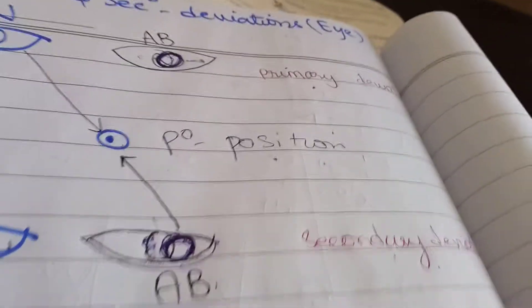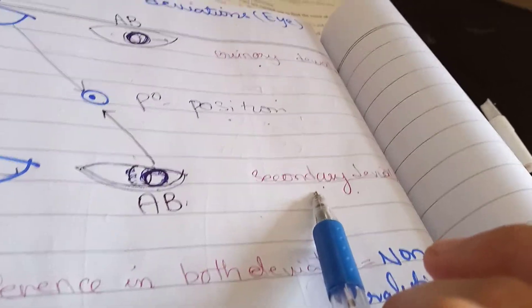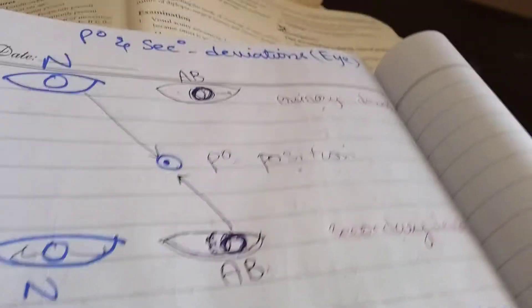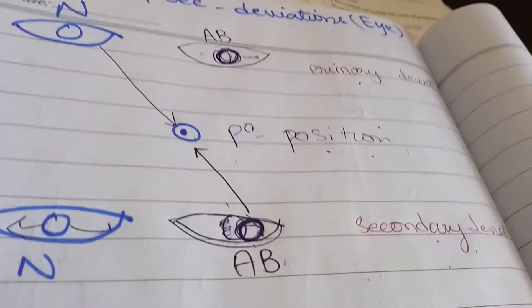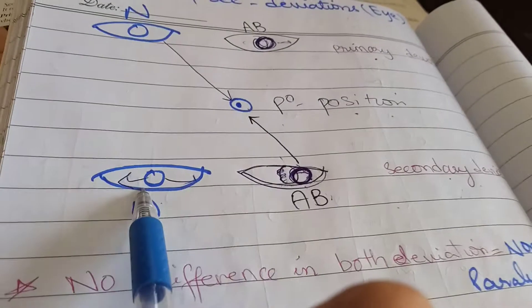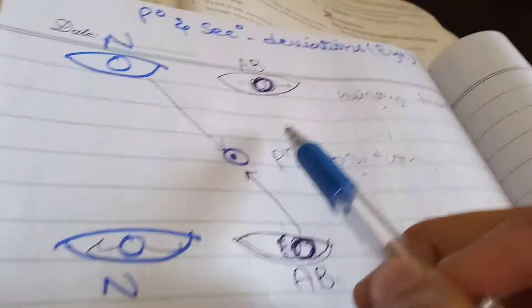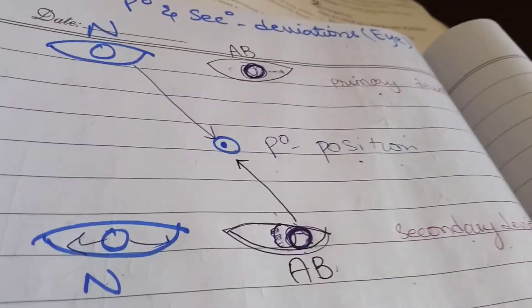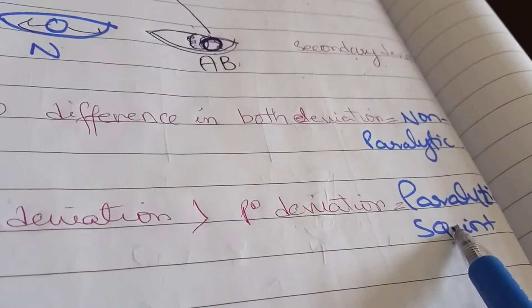In conditions where the primary deviation and the secondary deviation are very different — where a very prominent difference is seen — that type of squint is paralytic squint. Specifically, the secondary deviation is greater than the primary deviation. The secondary deviation, where the normal eye deviates, is far greater than the deviation of the affected eye when the normal eye was fixating. Secondary deviation greater than primary deviation is confirmation of paralytic squint.